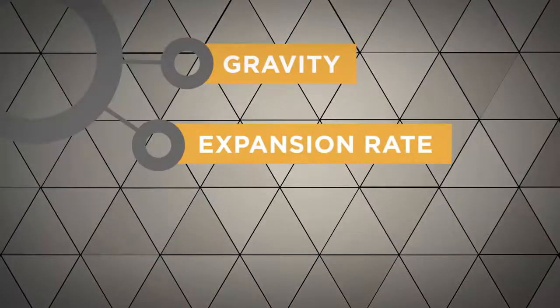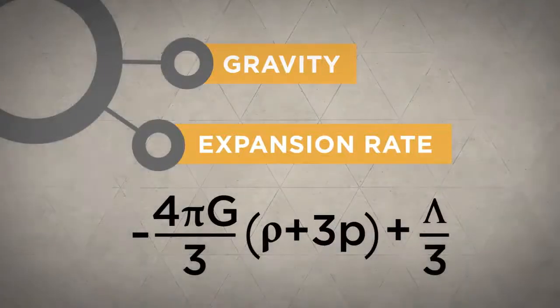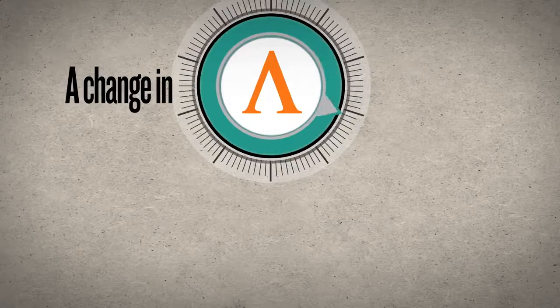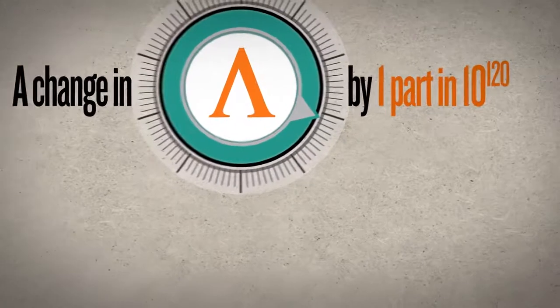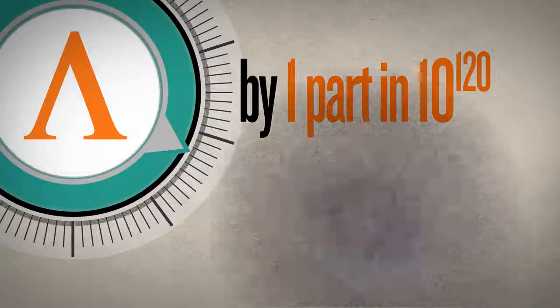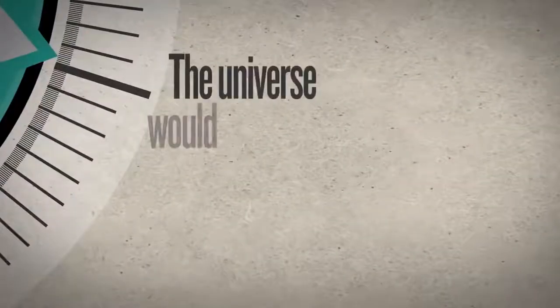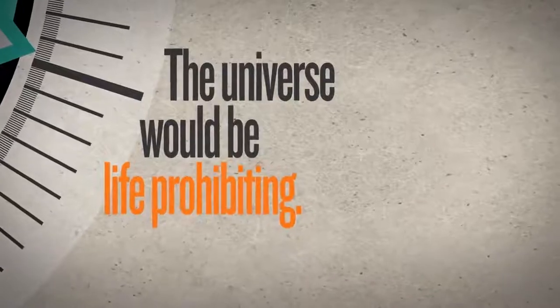Or consider the expansion rate of the universe. This is driven by the cosmological constant. A change in its value by a mere one part in 10 to the 120th parts would cause the universe to expand too rapidly or too slowly. In either case, the universe would, again, be life-prohibiting.